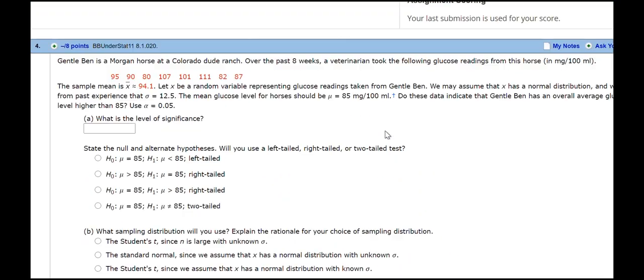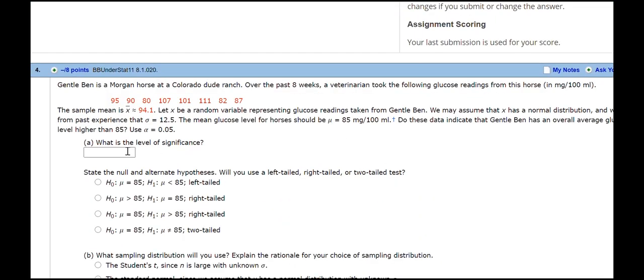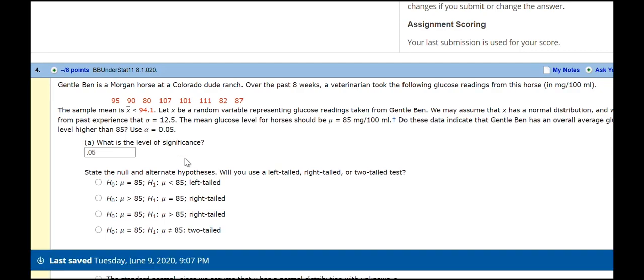I'm going to work through this problem. So, Part A, what is the level of significance? The level of significance is always just the same as alpha. So, the significance level is whatever alpha is, in this case 0.05.